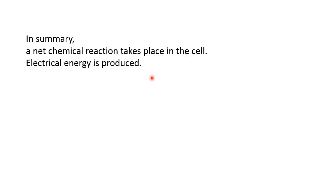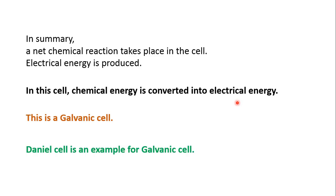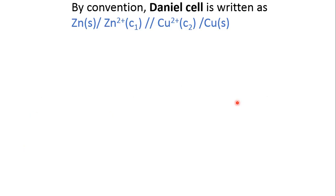A net chemical reaction takes place in this cell, and electrical energy is produced. Chemical energy is converted into electrical energy. This is what is known as a galvanic cell, where two dissimilar metals are connected together. The two dissimilar metals are zinc and copper in this case, and this is known as the Daniel cell, which is an example of a galvanic cell.